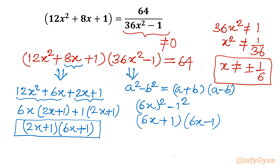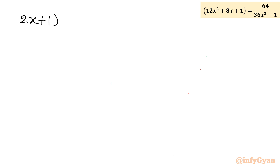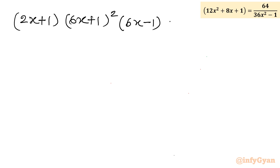Writing the overall equation after complete factorization: (2x + 1)(6x + 1)(6x + 1)(6x − 1) = 64. Notice that (6x + 1)(6x + 1) = (6x + 1)². So the equation becomes: (2x + 1)(6x + 1)²(6x − 1) = 64.